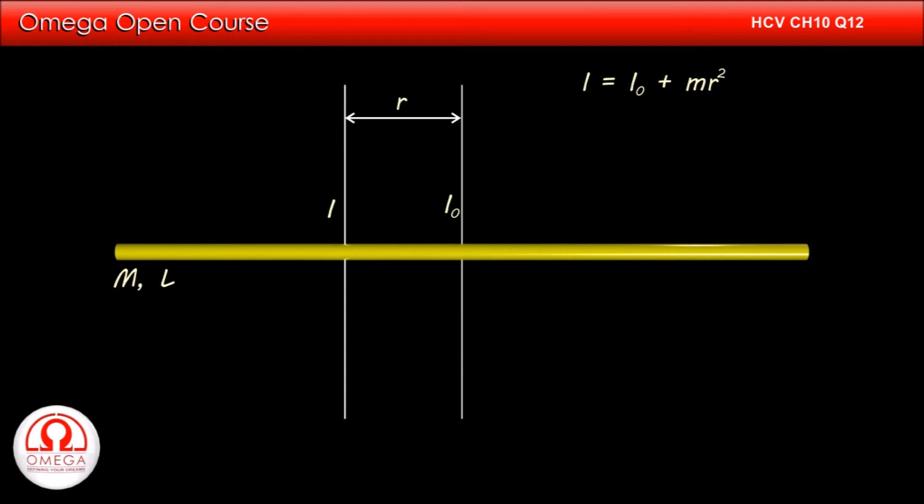We know that moment of inertia of a rod about an axis passing through its center of mass and perpendicular to it is (1/12)mL². Therefore, I must be equal to (1/12)mL² plus mr².